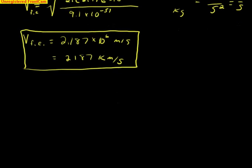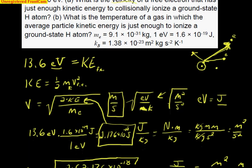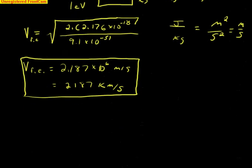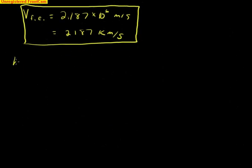For part (b), it asks: what is the temperature of a gas in which the average particle kinetic energy is just enough to ionize a ground state atom? Let's do part B. What is the temperature of the gas? We have to solve for T.